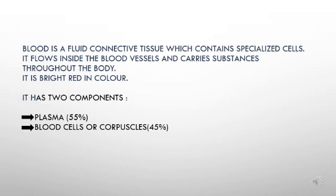An average adult normally has about 5 liters of blood. It has two components: plasma, approximately 55%, and blood cells or corpuscles, approximately 45%. Now this upcoming video will tell you about the components of the blood.